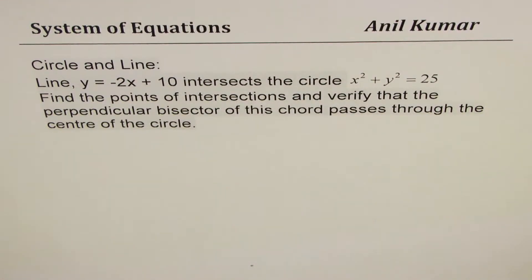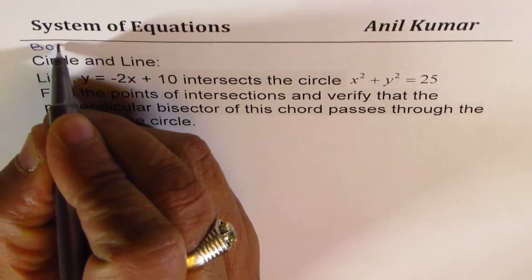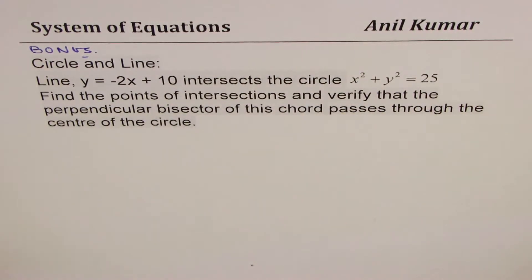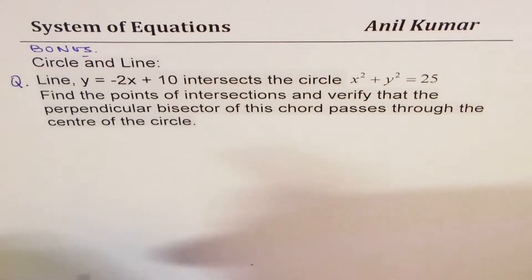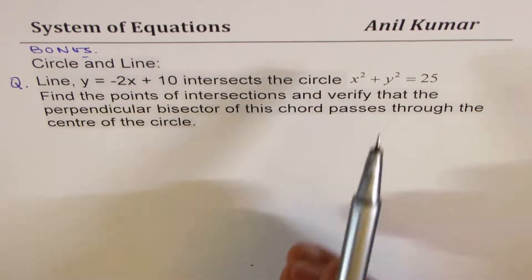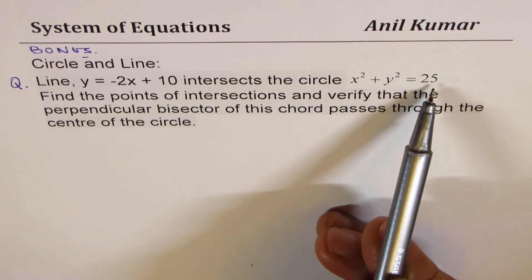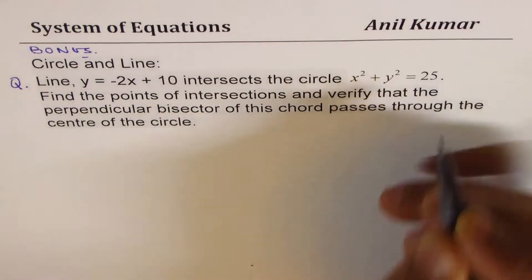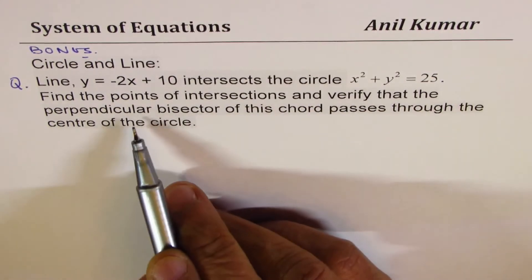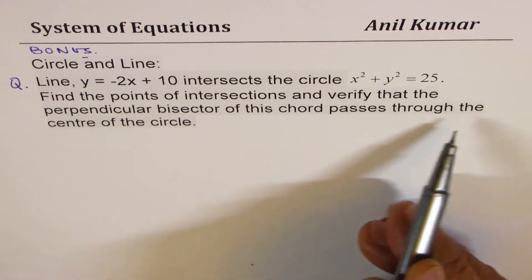I'm Anil Kumar sharing with you a bonus question on system of equations. It's really a very good question. You can always pause the video, answer the question, and then look into my suggestions. The question here is: Line y equals minus 2x plus 10 intersects the circle x squared plus y squared equals 25.